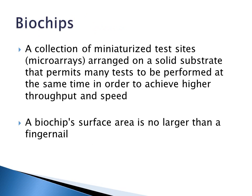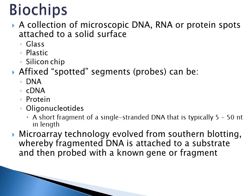A biochip is a collection of miniaturized test sites — what your microarray is — arranged on a solid substrate that permits many tests to be performed at the same time in order to achieve higher throughput and speed. A biochip's surface area is no larger than a fingernail. The solid surface can be glass such as a microscope slide, plastic, or a silicon chip.